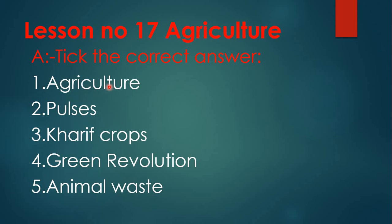Second answer: moong, gram and others are called pulses. Third one: crops that are grown in summer season are called kharif crops. Fourth: the movement started by the government of India to increase agricultural production is known as green revolution. Fifth: biogas is produced from animal waste.